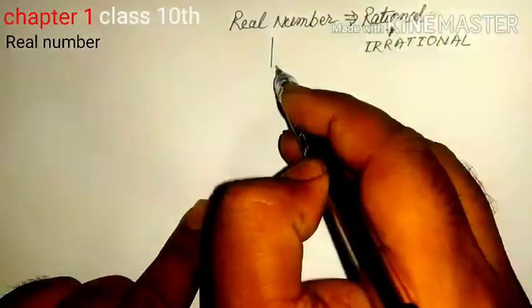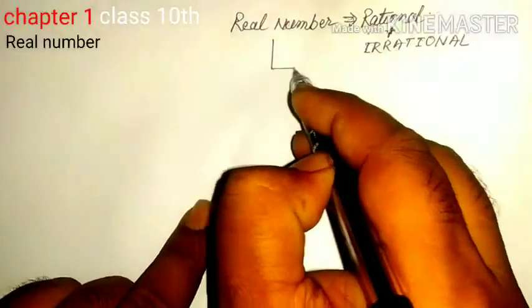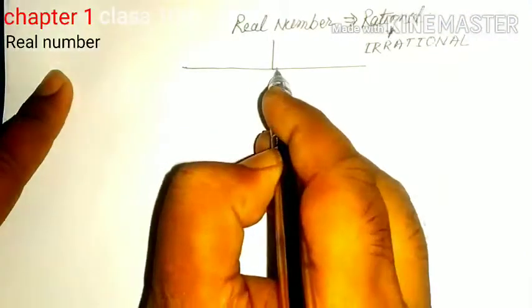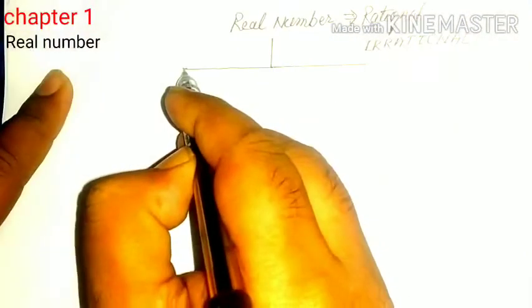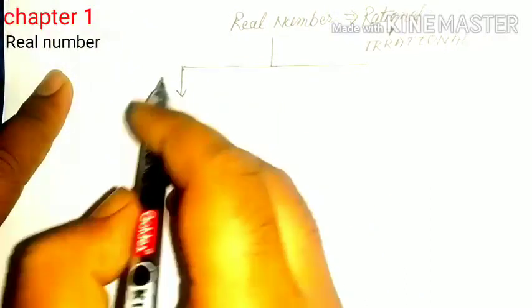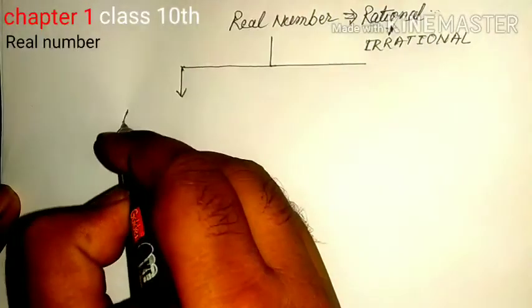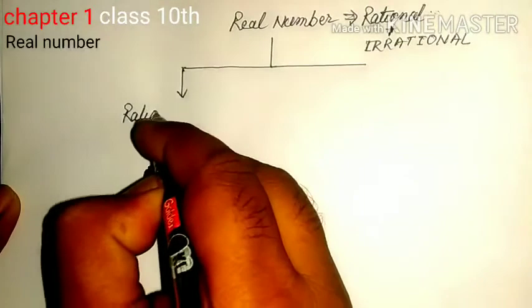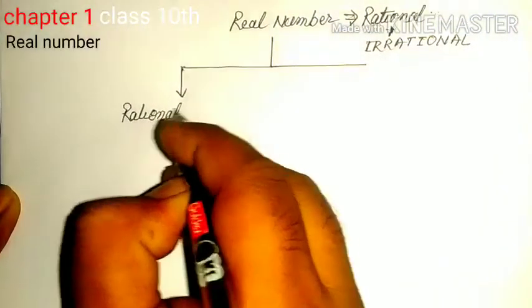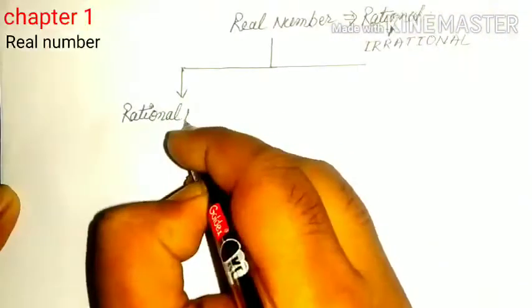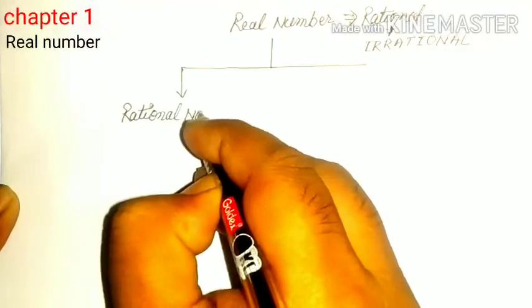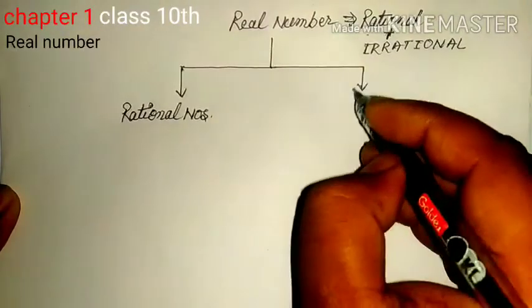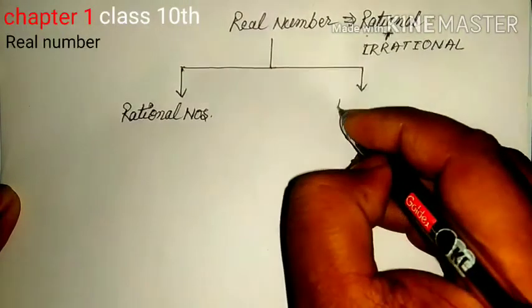Real numbers can be divided into two categories. First, we have rational numbers, and secondly, we have irrational numbers.